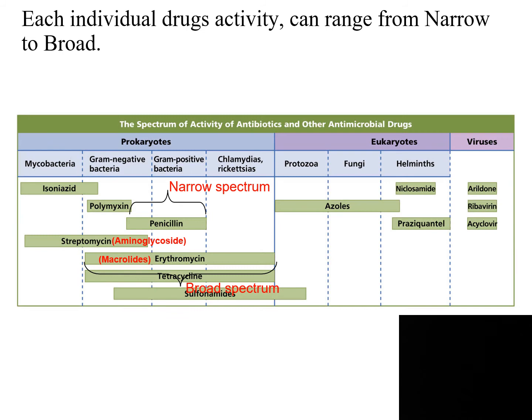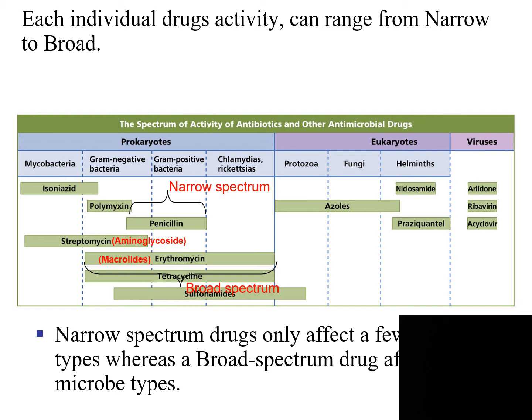Each individual drug's activity can range from a narrow spectrum to a broad spectrum. Narrow spectrum drugs only affect a few microbes. For example, if you look at penicillin in this table, it only affects gram-positive bacteria. Whereas a broad spectrum drug affects many microbes. If you look at tetracycline, it affects both gram-negative and gram-positive bacteria.